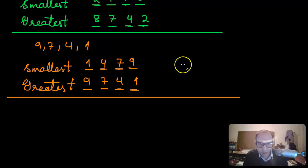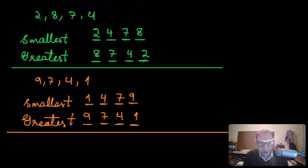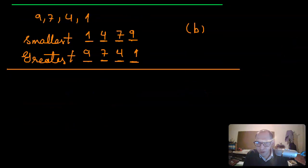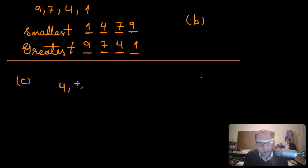For the greatest number, as we did before, you make the largest place value as large as possible — so nine, seven, four, one. You can try the rest on your own. This was part A, this was part B. Now part C of the question: the digits are four, seven, five, and zero.